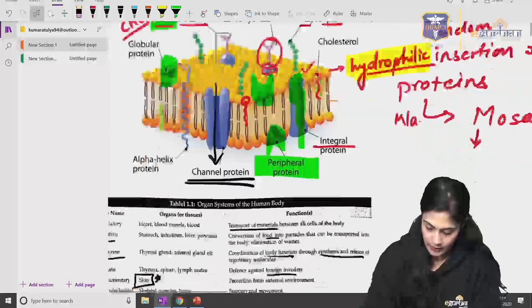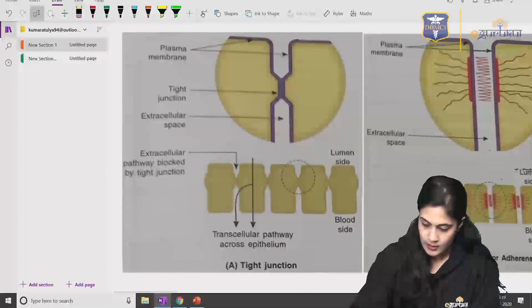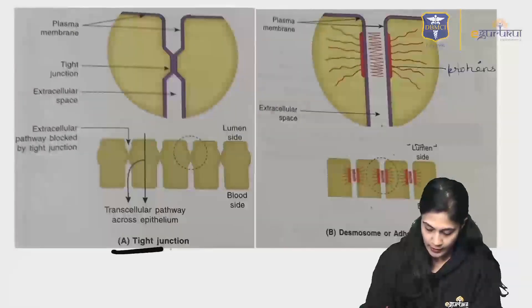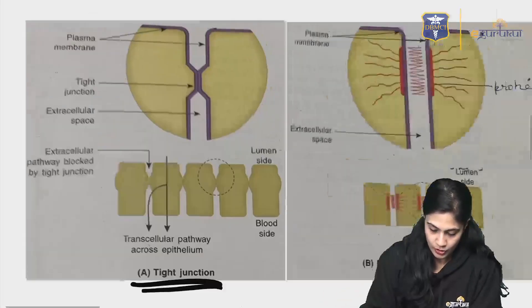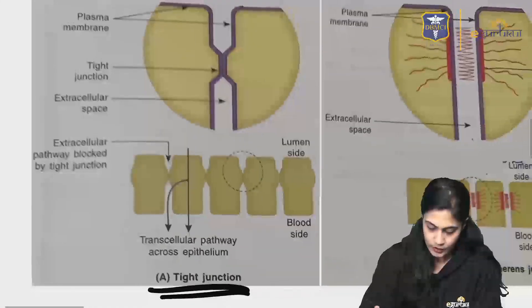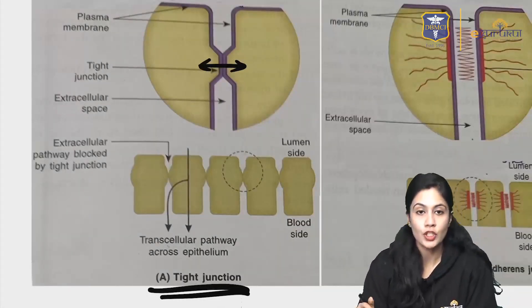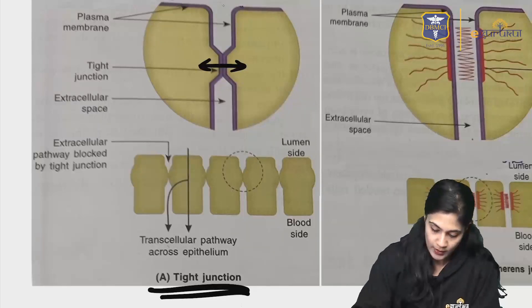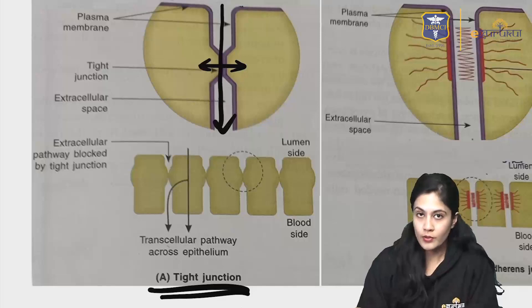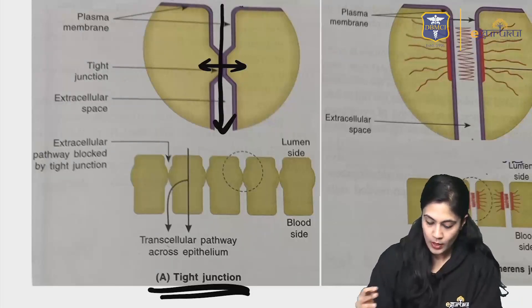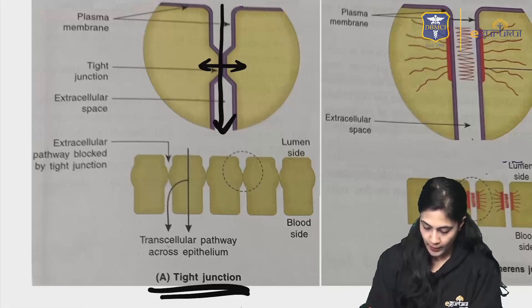If we have to see the diagram of the tight junction, here we go. This is the diagram of tight junction. Do not worry about the desmosomes for now. Just have a look on the tight junction that you can see these are firmly attached with each other. So this is forming the barrier. Whenever some things are required, then only they can pass through. Otherwise, this tight junction will not allow the substance to pass through or pass across.